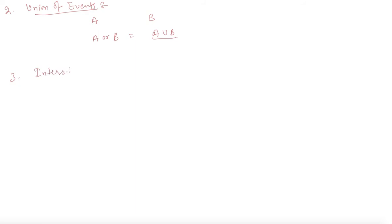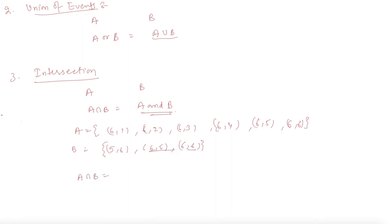Now let's come to intersection. If there are two events A and B, then A intersection B will be A and B both occurring simultaneously. Let's take the example: A has elements (6,1), (6,2), (6,3), (6,4), (6,5), and (6,6). A intersection B will be these two events because they are the only common events, containing (6,5) and (6,6).